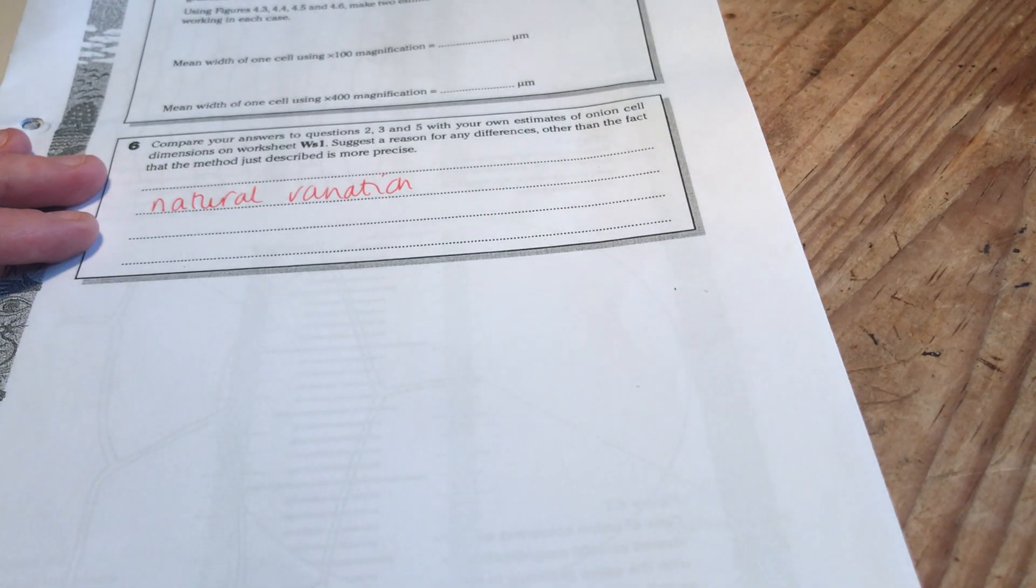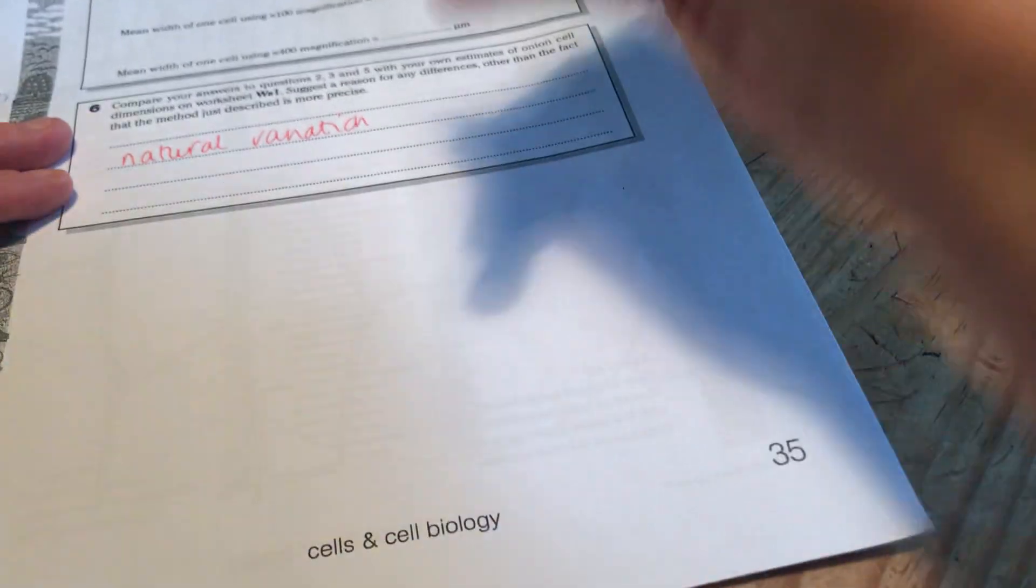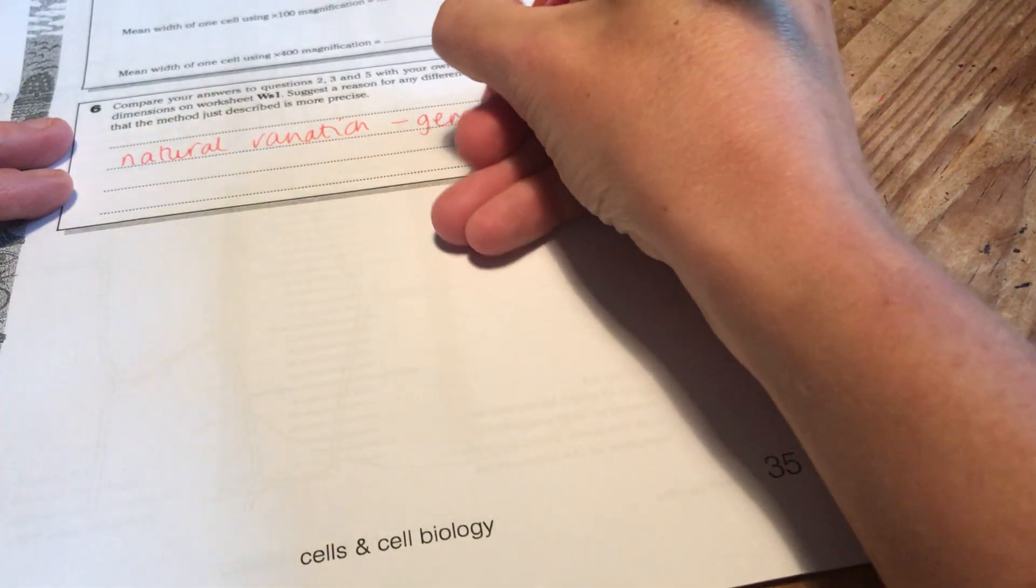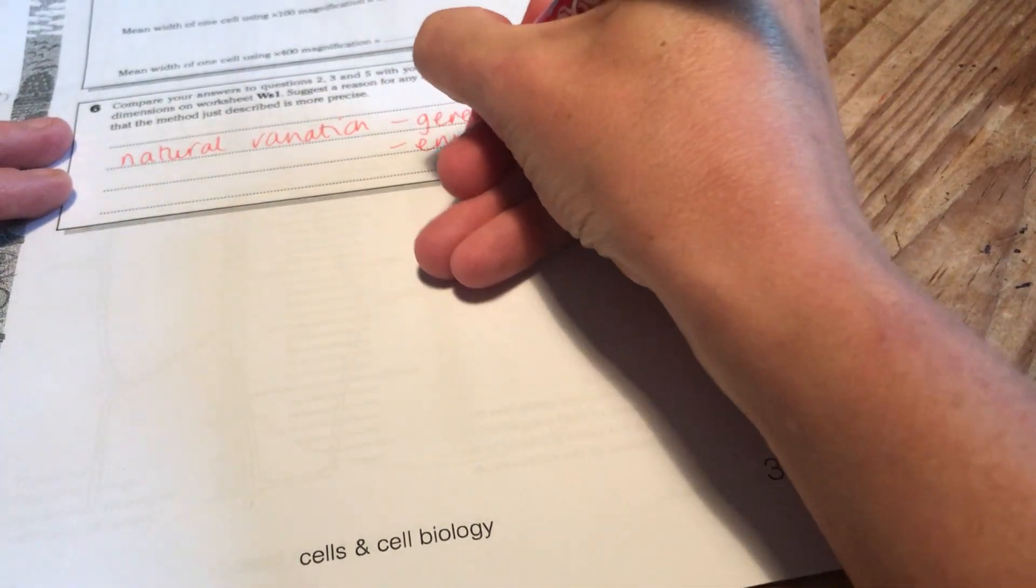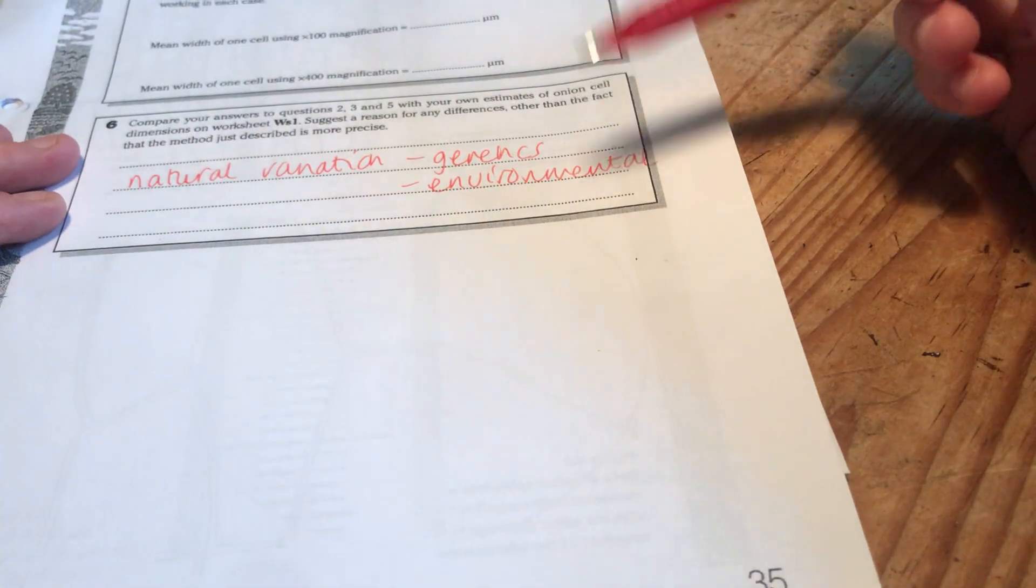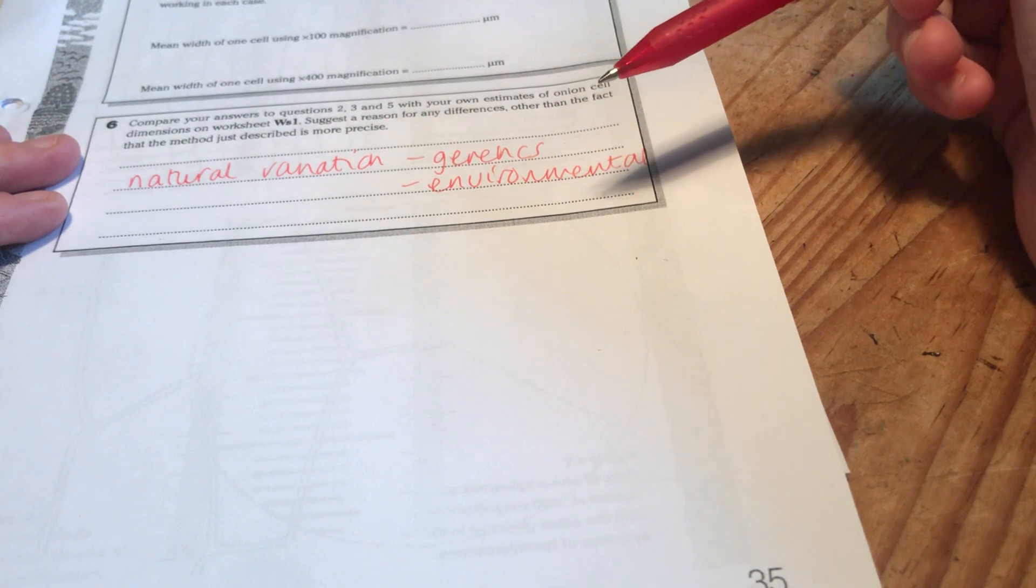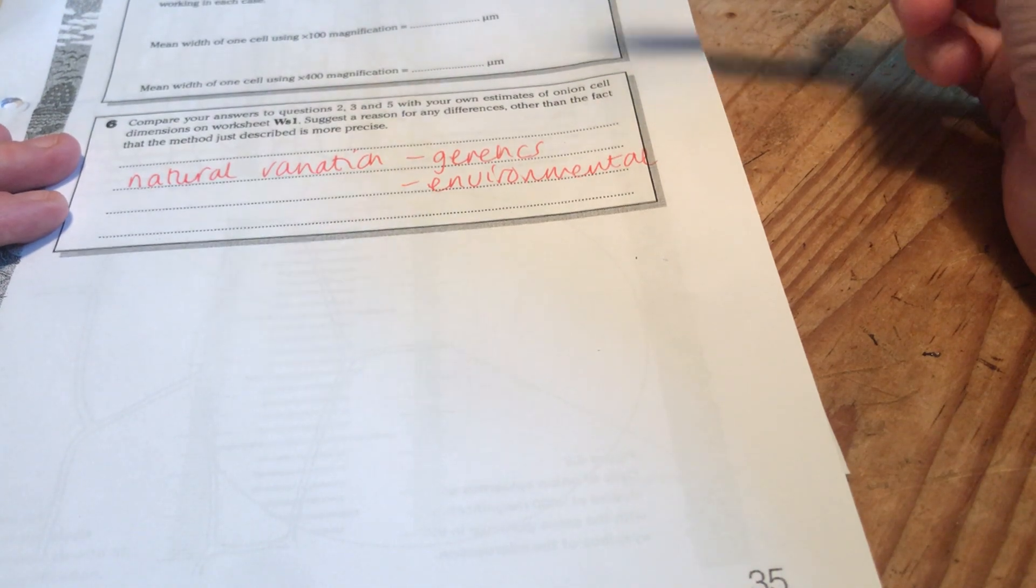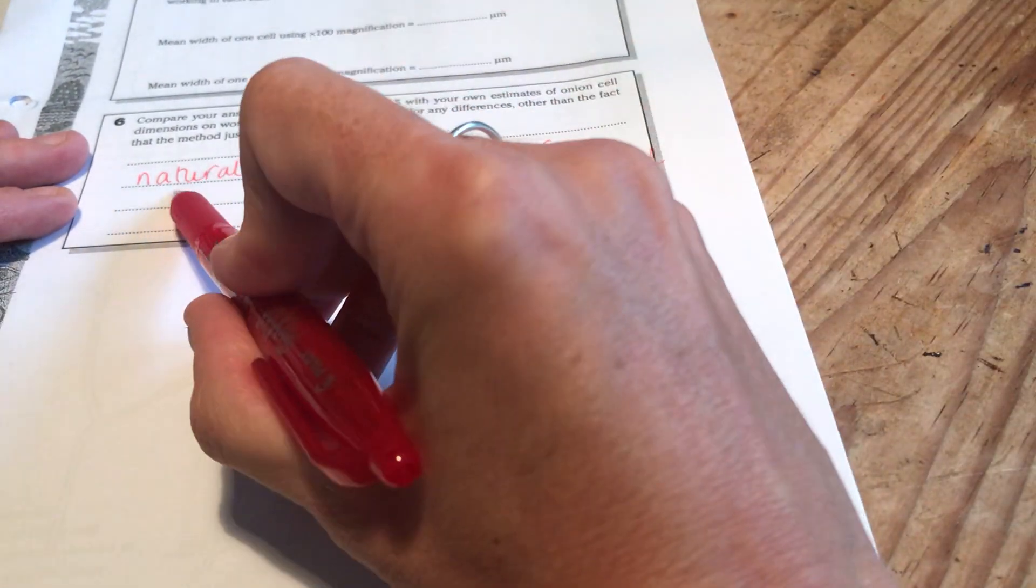In biology, we always encounter a lot of natural variation in the length of cells. There are genetic differences that cause those. There are environmental reasons why you get variation. But you don't expect every individual to be the same at all in biology. It's not like chemistry or physics where particles are all very similar. We have a lot of natural variation.